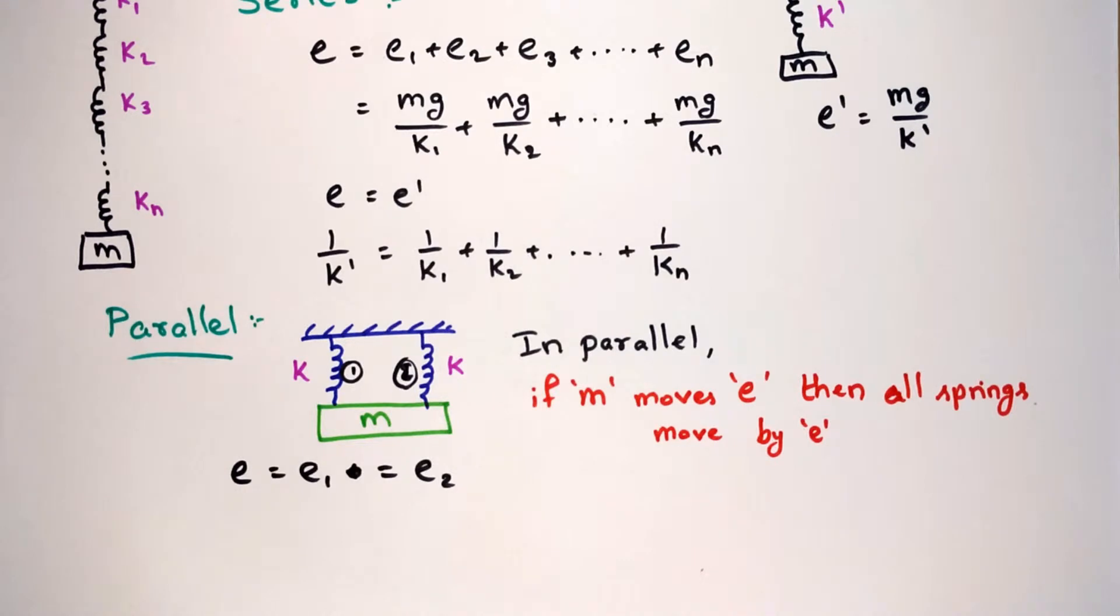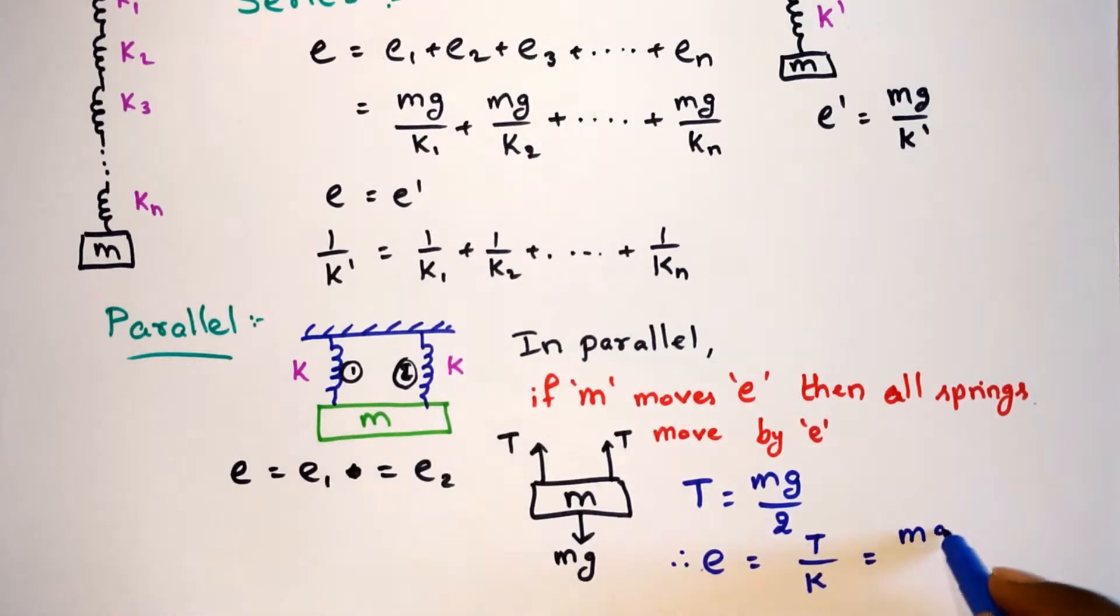Since both springs are identical and placed symmetrically on the mass, both springs will exert the same amount of tension force. So from the free body diagram of mass M we can write T equals Mg by 2, and from Hooke's law, elongation of springs E equals T by k, which equals Mg by 2k.